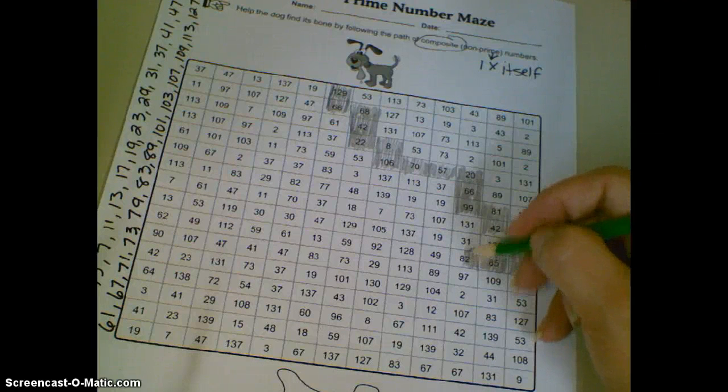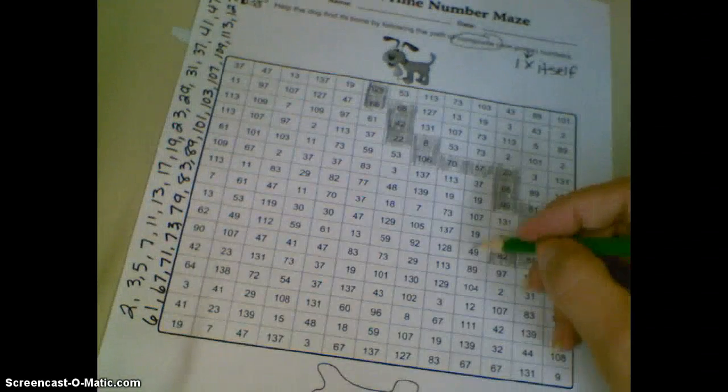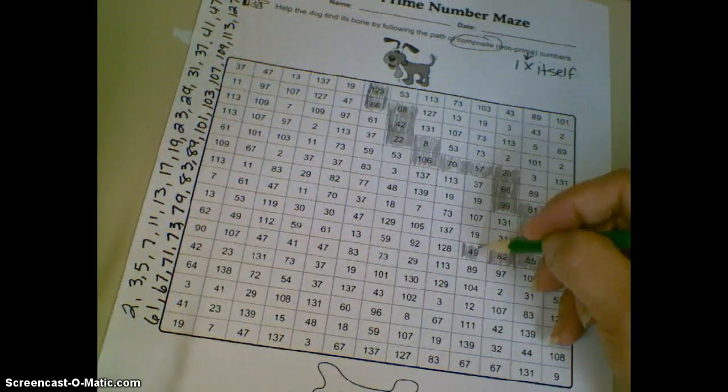That can always help out on days like this, too. 82 is a composite number. 49, even though it's odd, 7 times 7 is 49, so it's a composite number.